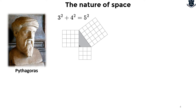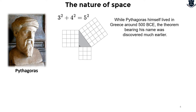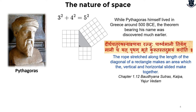While Pythagoras himself lived in Greece around 500 BCE, the theorem bearing his name was actually discovered much earlier in various places around the world. For example, this Sanskrit shloka from the Bodhyayana Sutra's Kalpa Yajur Vedam actually speaks the same thing: the rope stretched along the length of the diagonal of a rectangle makes an area which the vertical and horizontal sides make together — essentially hypotenuse squared equals base squared plus perpendicular squared. This Sanskrit shloka from the Yajur Vedam tells the same thing.